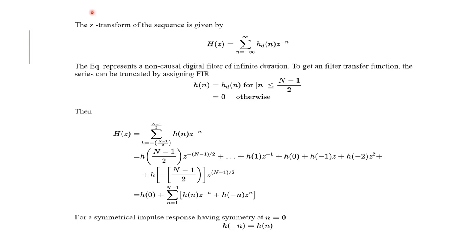The next step is to obtain the z-transform of the sequence. The formula for calculating the z-transform is: h(z) = summation from n = −∞ to ∞ of hd(n) · z^(−n). This equation is actually a non-causal digital filter of infinite duration.